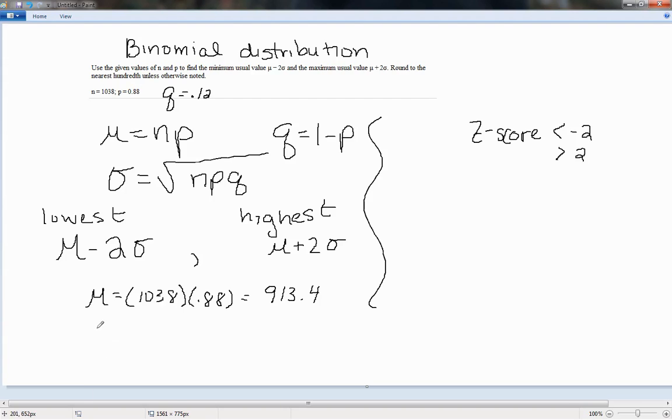And then for our standard deviation, we would want the square root of 1038 times .88 times .12, our q. So if we put that in our calculator, we get 10.5 if we round to one decimal place.